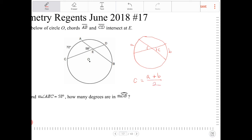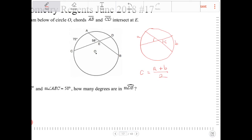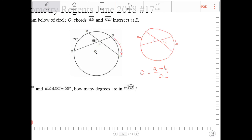So we add the two and divide by two. Looking at this, they're asking us to find what arc BD is, so we set up this equation. 58 degrees equals 72 plus x, divided by 2, where x is arc DB.